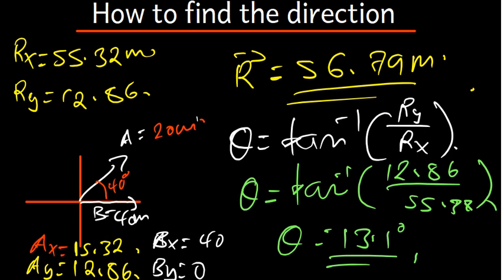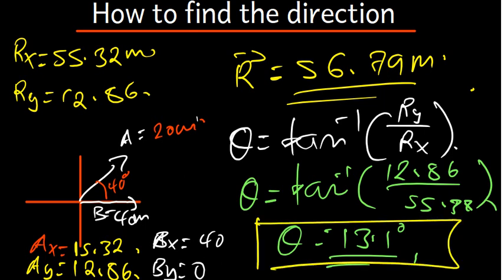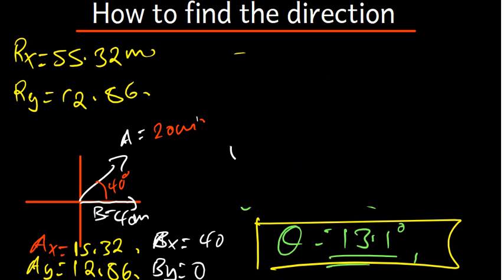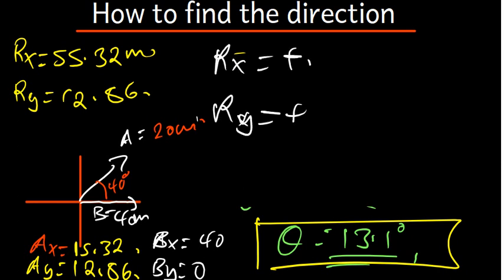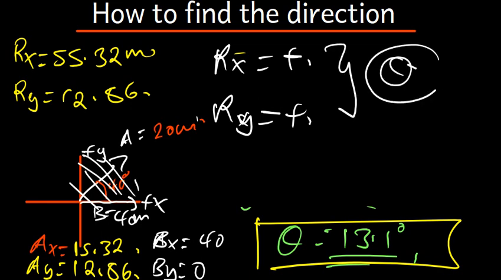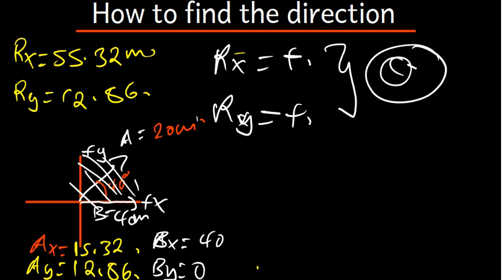After finding theta, you are not done. We go back to the principles: our RX was positive and our RY was also positive, so the angle has to fall in the first quadrant, meaning theta is our final answer — 13.1 degrees. If RX had been negative, the angle would fall in the second quadrant and we would say 180 minus theta as the final answer.